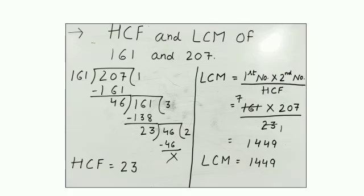You have done LCM by prime factorization method and division method. Now there is one more method to find LCM. First number multiplied by second number divided by HCF. What is the first number? 161. And what is the second number? 207.